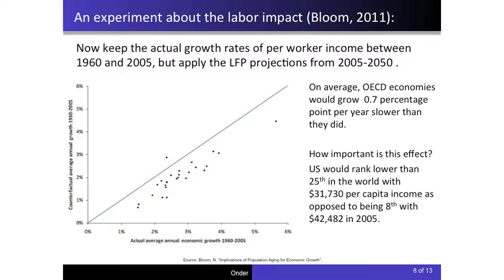An experiment by Nick Bloom of Harvard University investigates how important the labor force participation rate is. It looks at OECD economies between 1960 and 2005, using actual productivity growth and income per capita, but replacing the 1960–2005 labor force participation with projected future labor dynamics — essentially asking: what if OECD economies had the future demographic transition in the past?